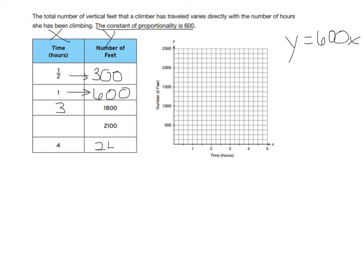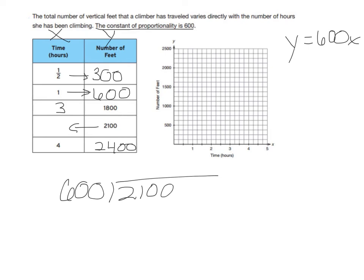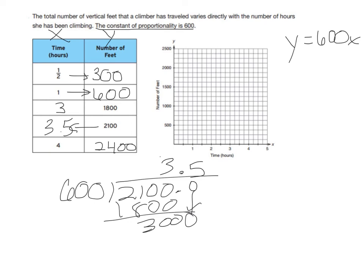Then 4 times 600 is 2,400. Going backwards to find x when y is 2,100: 600 goes in 3 times giving 1,800, leaving 300. Add a decimal and drop a zero — that's 3.5 times. So x is 3.5 hours. To graph this, note the y-axis counts by 125s, so the middle line is 250. At one-half hour the point is a little above 250, and at 1 hour the point is a little above 500.